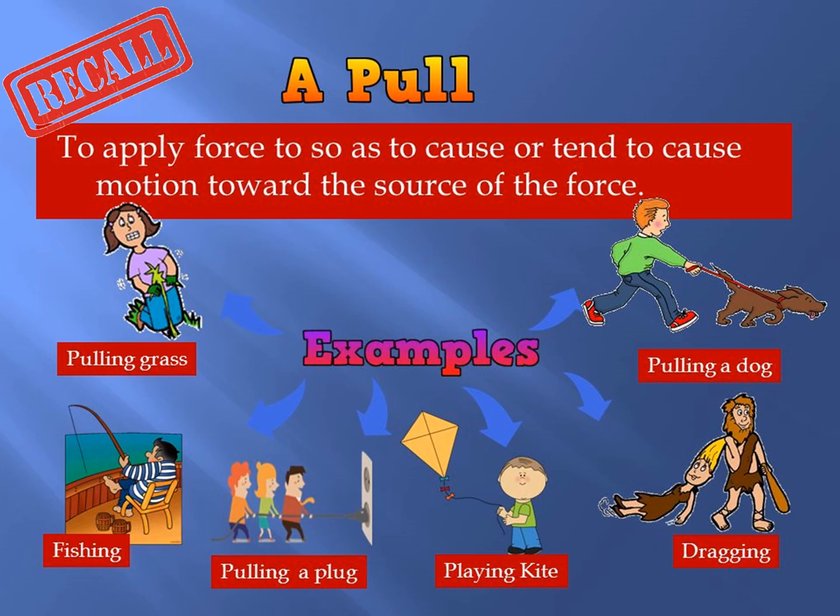Here are the examples of a pull. A pull is to apply force so as to cause or tend to cause motion towards the source of the force — like pulling grass, fishing, pulling a plug, playing kite, dragging, or pulling a dog. The greater the force, the greater the change in the distance covered by the object. Some objects return to their original shape after the release of force and some don't.